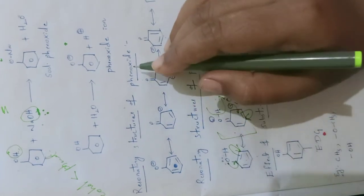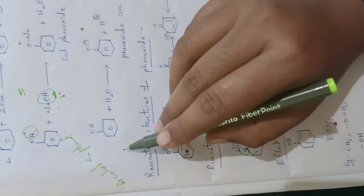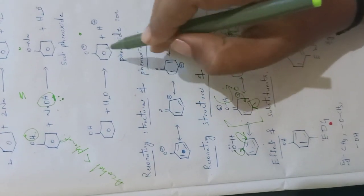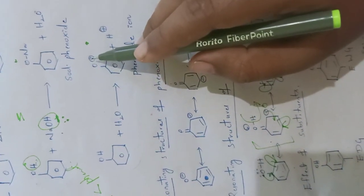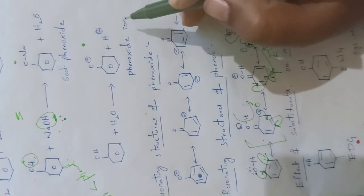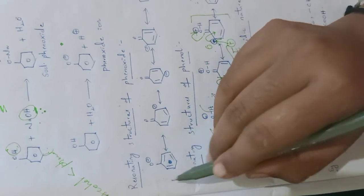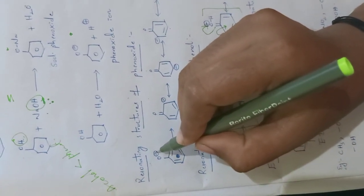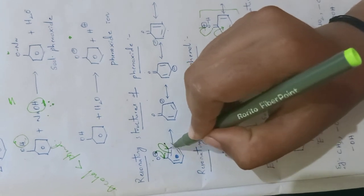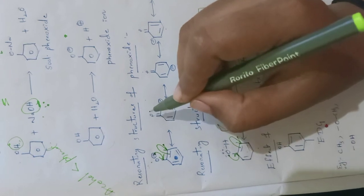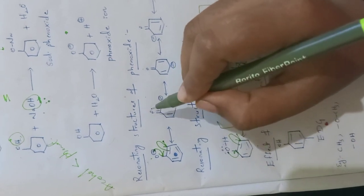Now we will see the resonating structures of phenoxide ion. Whenever phenol loses H+, it is converted into a negatively charged ion known as phenoxide ion. After losing H+, the negative charge is accommodated on oxygen, converting it to phenoxide ion. This phenoxide ion can also participate in resonance. In the resonating structures of phenoxide — when phenoxide contains a negative charge on oxygen, this makes a pi bond between oxygen and carbon, causing the adjacent pi bond to move to the carbon atom, and that carbon gets a negative charge. There is no more charge on oxygen because the extra negative charge participated in bond formation.